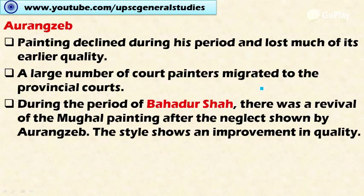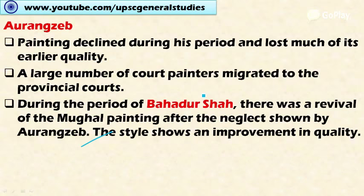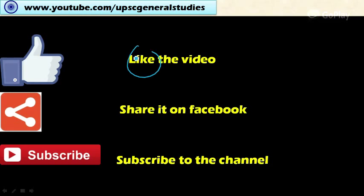During Aurangzeb's period, painting declined. He was an orthodox Muslim and since painting is forbidden in orthodox Islam, the art lost much of its earlier quality. A large number of court painters migrated to provincial courts and other rulers such as the Rajasthani rulers. After Aurangzeb, during Bahadur Shah's period, there was a certain revival in Mughal painting. Overall, Aurangzeb's reign marked the decline of the Mughal school of painting.